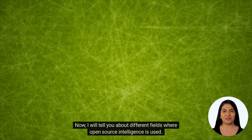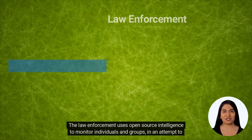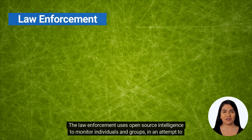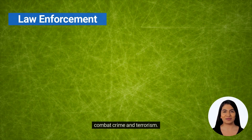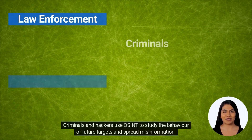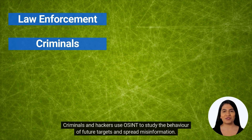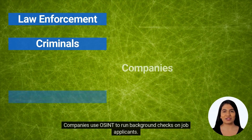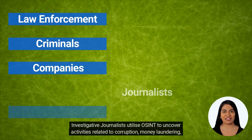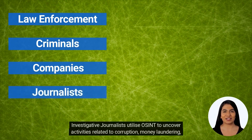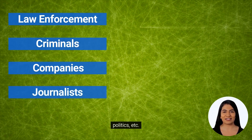I will tell you about different fields where open source intelligence is used. Law enforcement uses open source intelligence to monitor individuals and groups in an attempt to combat crime and terrorism. Criminals and hackers use OSINT to study the behavior of future targets and spread misinformation. Companies use OSINT to run background checks on job applicants. Investigative journalists utilize OSINT to uncover activities related to corruption, money laundering, politics, etc.